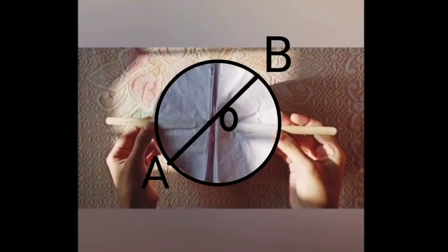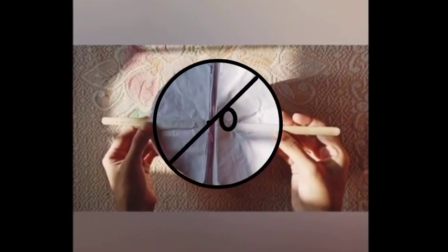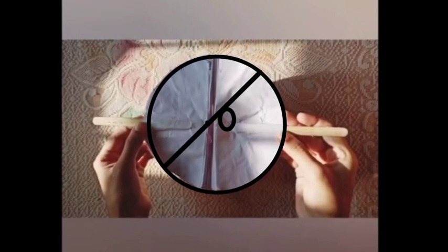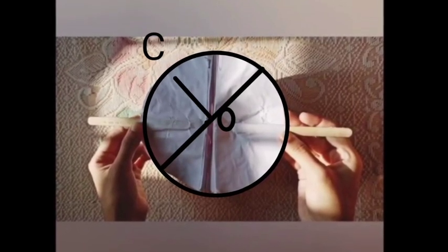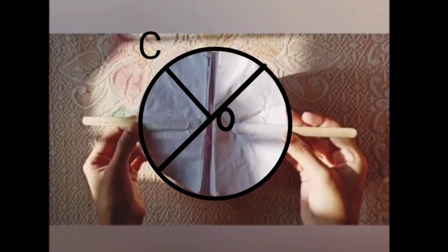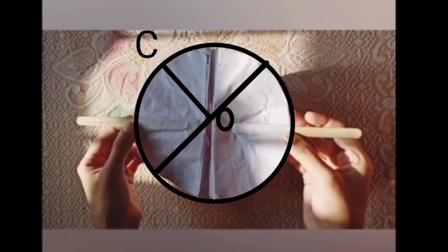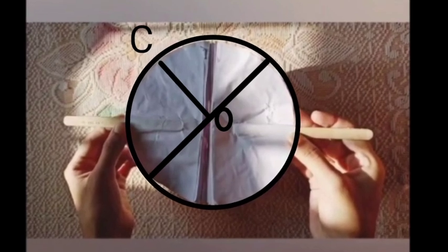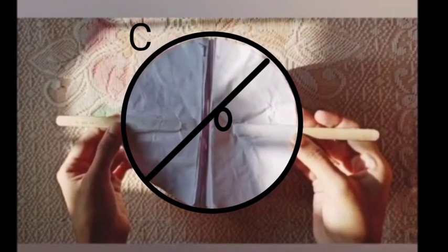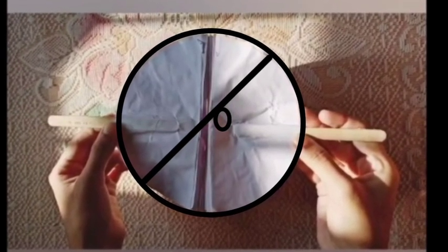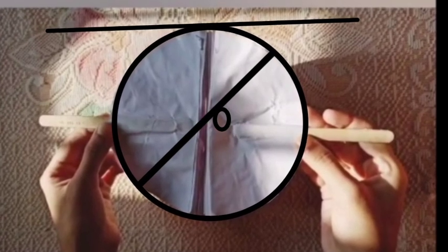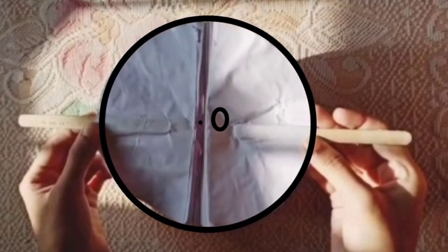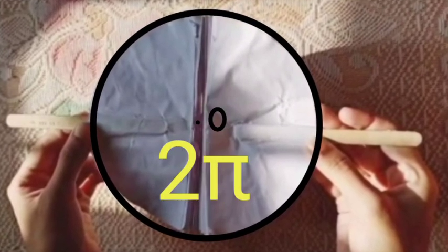AB is the diameter. A chord passing through the centre of a circle is called the diameter. It is the longest chord. OC is the radius — the constant distance from the centre is called the radius. We know that d is equal to 2r, that is, diameter is twice the radius. When a line meets the circle at one point or two coinciding points, the line is known as a tangent. The circumference of a circle is 2πr.